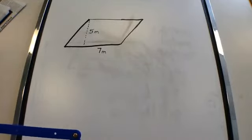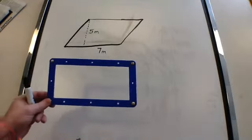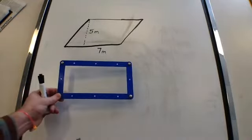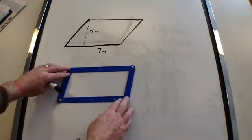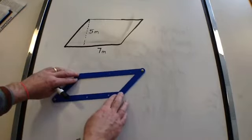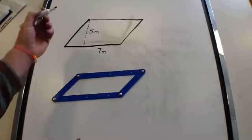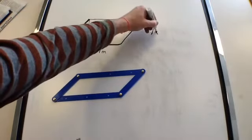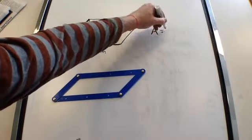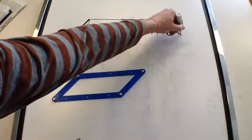Now we are going to look at the area of a parallelogram. A parallelogram is basically a rectangle that is tilted. The formula for a parallelogram is area equals base times the height.